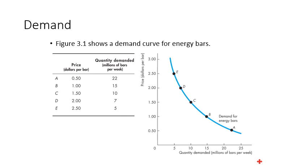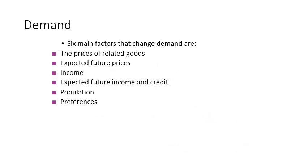If you connect these points, you get what we call the demand curve, which is downward sloping. The quantity demanded changes according to the change in price, but there are also factors that could shift the entire demand curve.